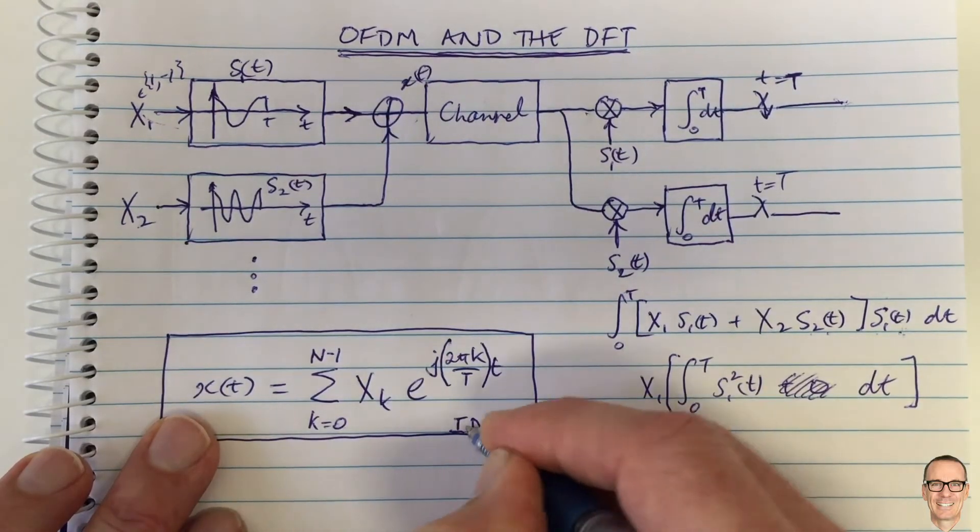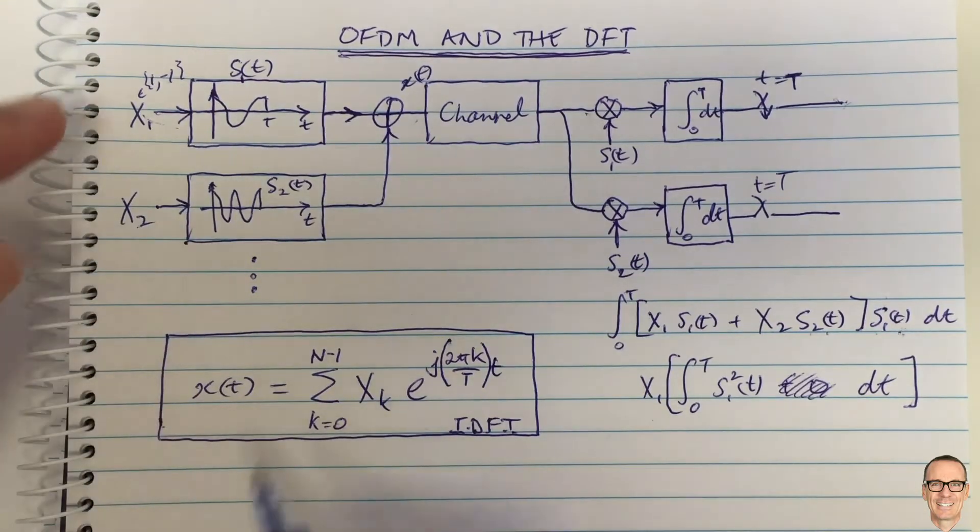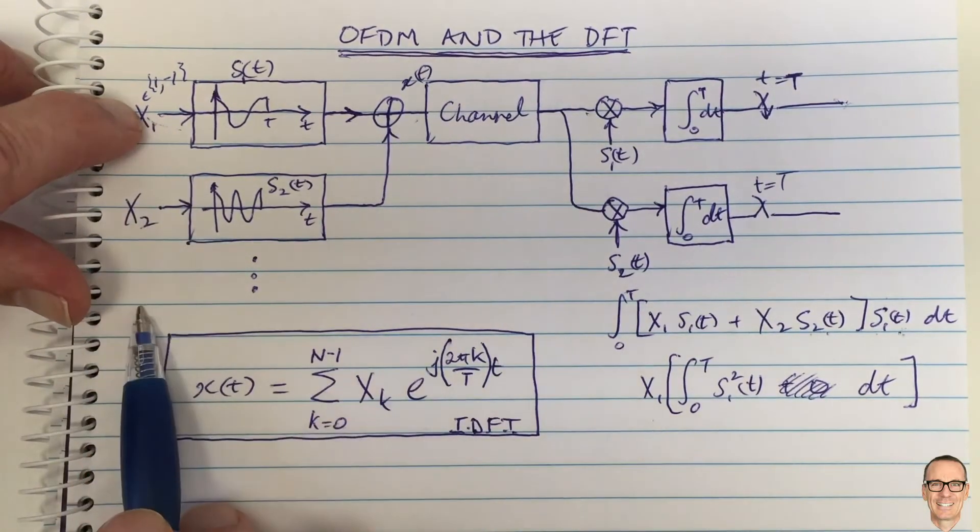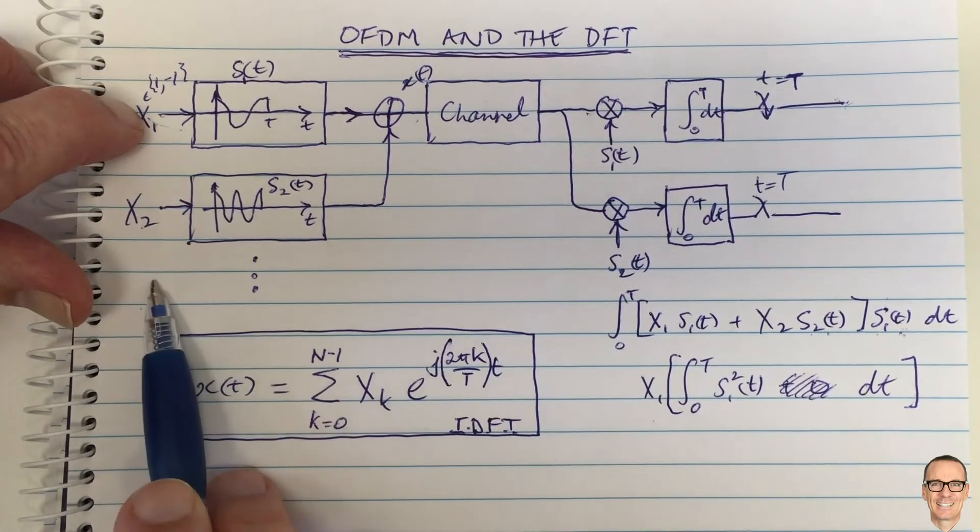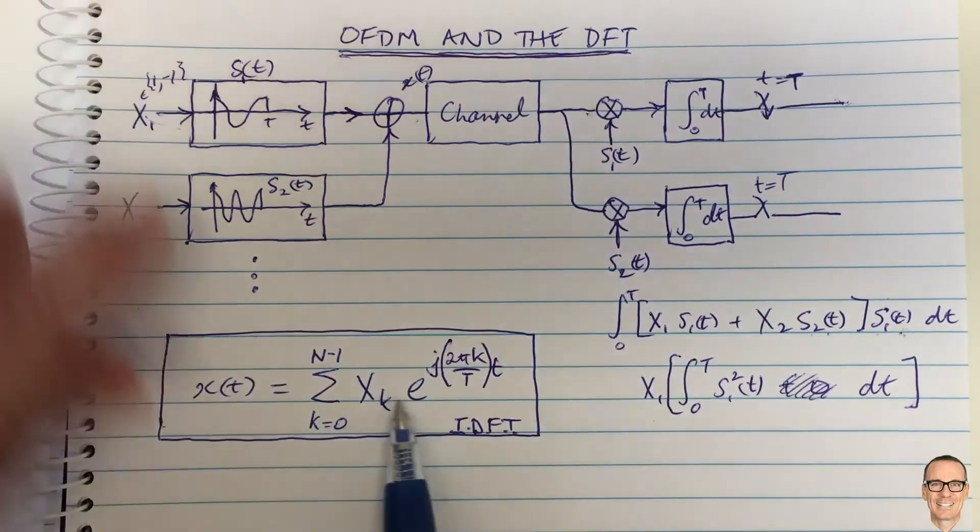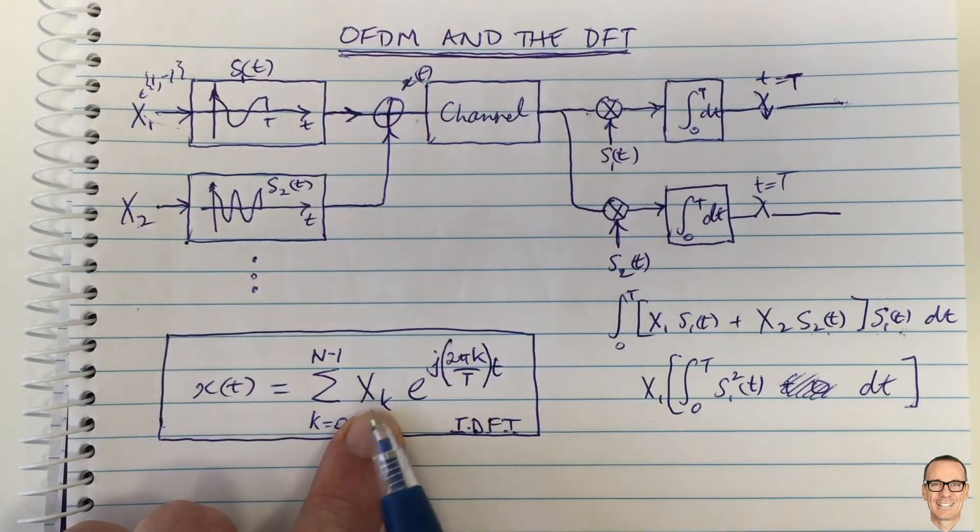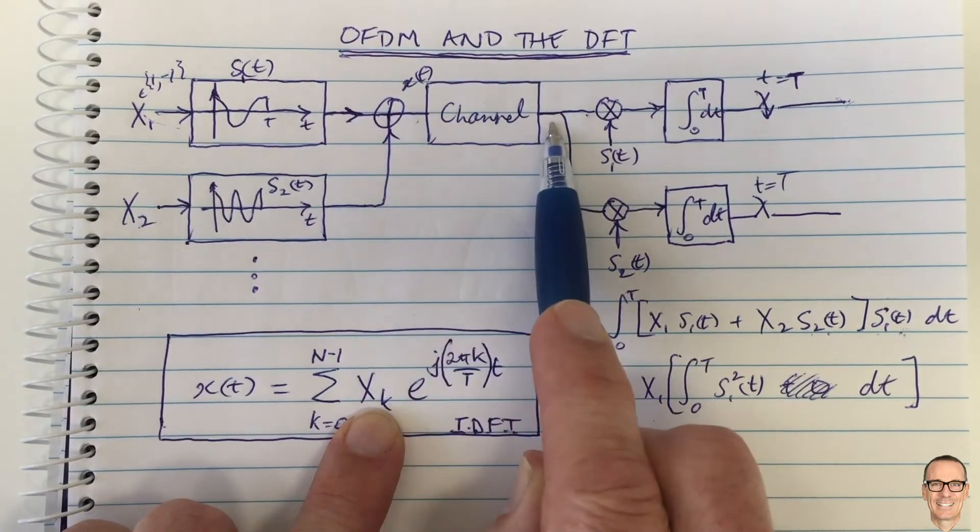We can replace all of this by simply—and so this is the inverse discrete Fourier transform—by simply an inverse discrete Fourier transform. Then we can view these x1, x2, x up to x(n-1) as being—I mean they are the digital data—but we can view them as being the frequency domain components of our signal x(t) which we're going to send over the channel.